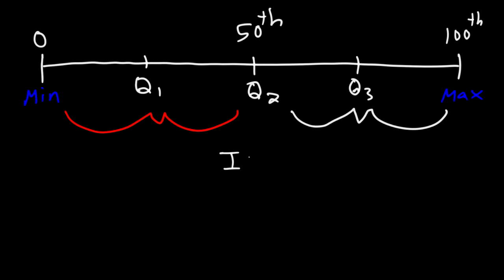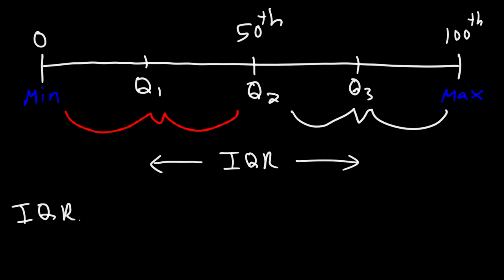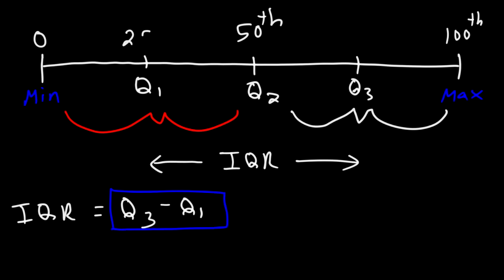The interquartile range represents the middle 50 percent of the data. IQR is the difference between the third quartile and the first quartile. And so that's how you find it. By the way, Q1 represents the 25th percentile and Q3 represents the 75th percentile.